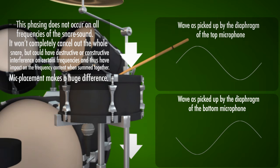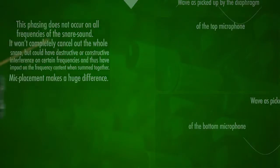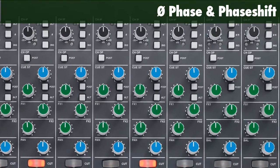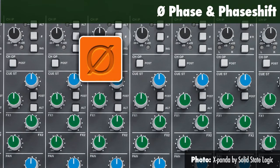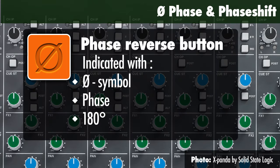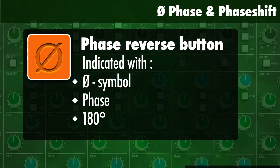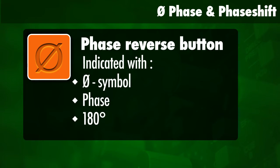This phasing will not occur on all frequencies of the snare, but we will definitely notice that some frequencies are missing or even amplified. For that, we've got a 180 degree phase offset switch on a console or on a microphone preamp, and this allows us to offset the phase by 180 degrees and just invert the signal.